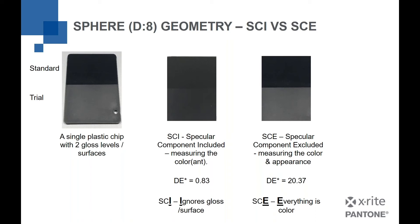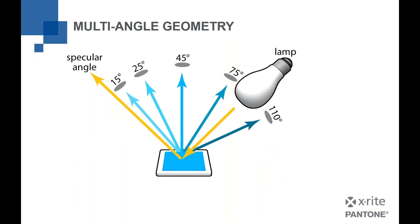If you want more information about this topic, we have lots more on our website and we'll be happy to answer questions. The third kind of instrument used to measure color is a multi-angle instrument. Like its name sounds, it has multiple angles where color is measured — light at a single 45-degree angle, measuring at 15, 25, 45, 75, and 110 degrees. Some instruments go up to 12 angles with a second light source.